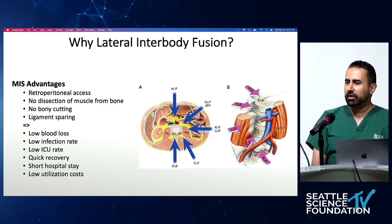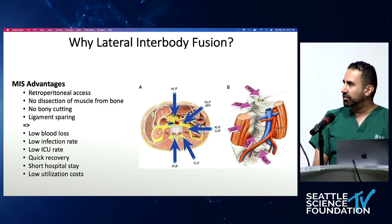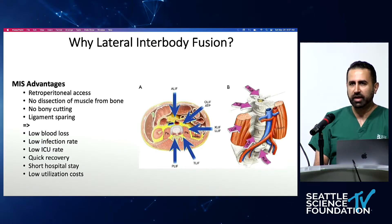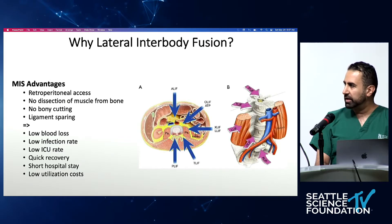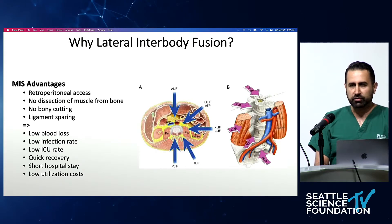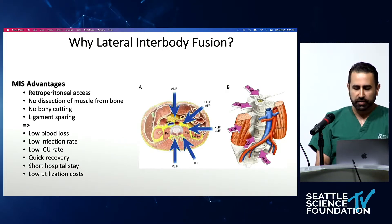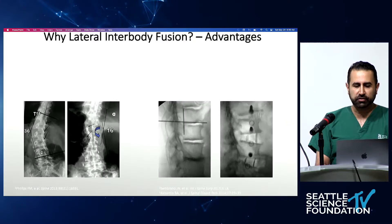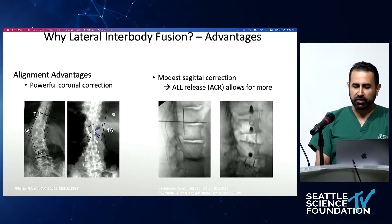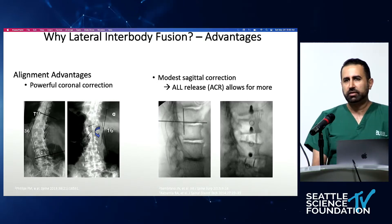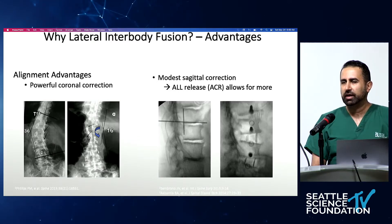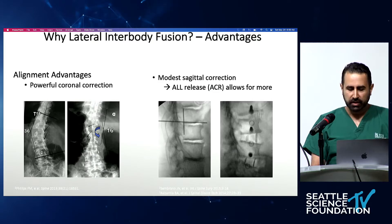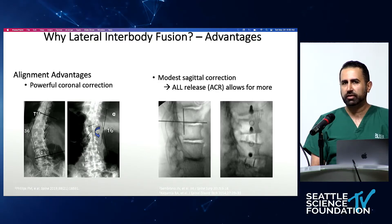We use lateral interbody fusion very successfully now — this is a very well-established technique that's been around for well more than a decade. Its advantages are obvious; it truly is the addition of this MIS approach to something that was present all along. It's a powerful correction technique, particularly in the coronal plane, and when you add ALL division through an anterior column reconstruction it gives you so much more, especially for the sagittal plane.